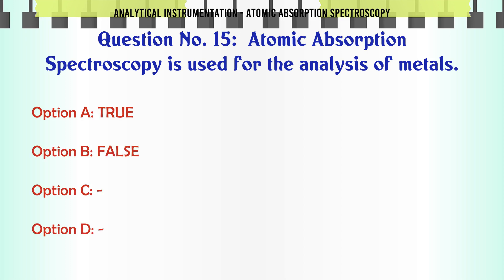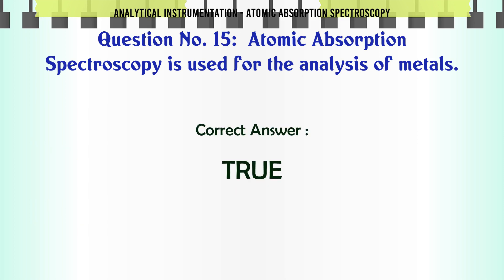Atomic absorption spectroscopy is used for the analysis of metals. A. True. B. False. The correct answer is true.